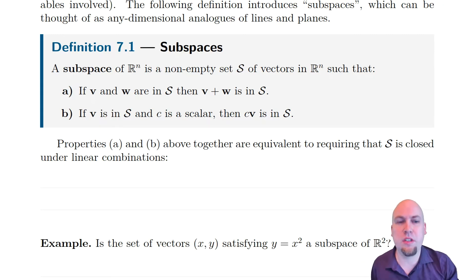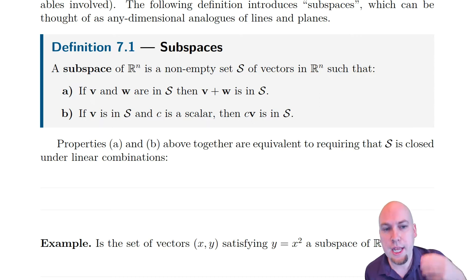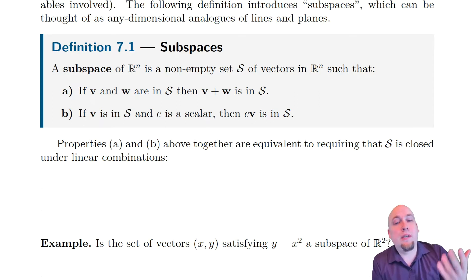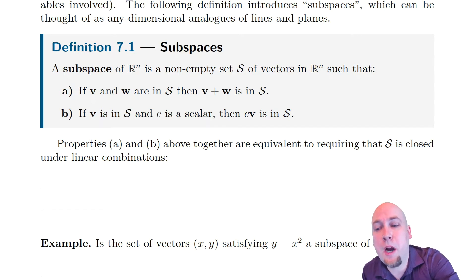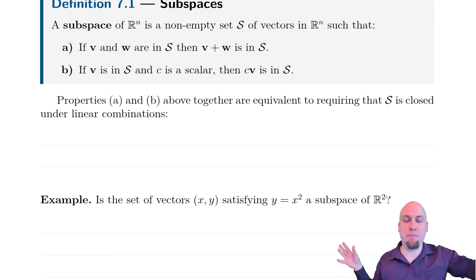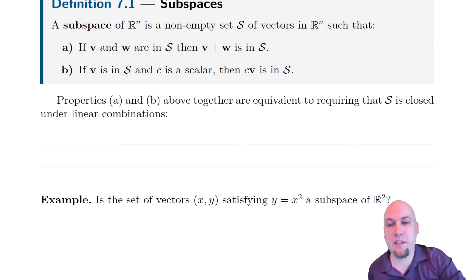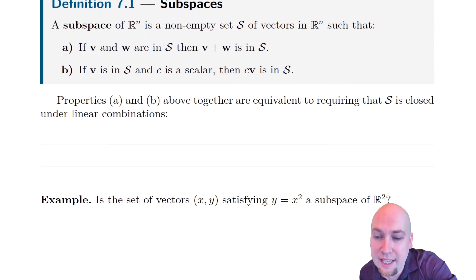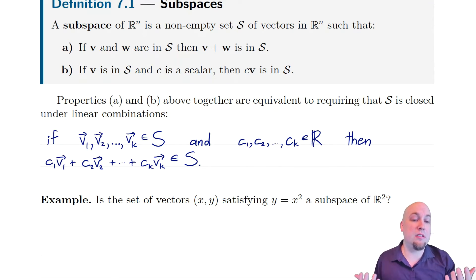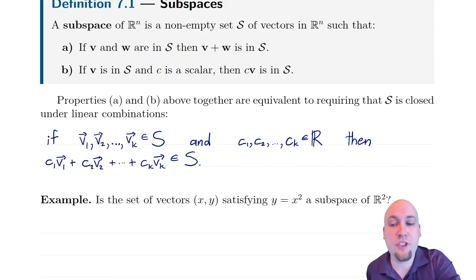So in other words, a subspace is a set of vectors that respects our two basic operations on vectors — vector addition and scalar multiplication. Formally, we say the set is closed under those two operations: closed under vector addition and scalar multiplication.